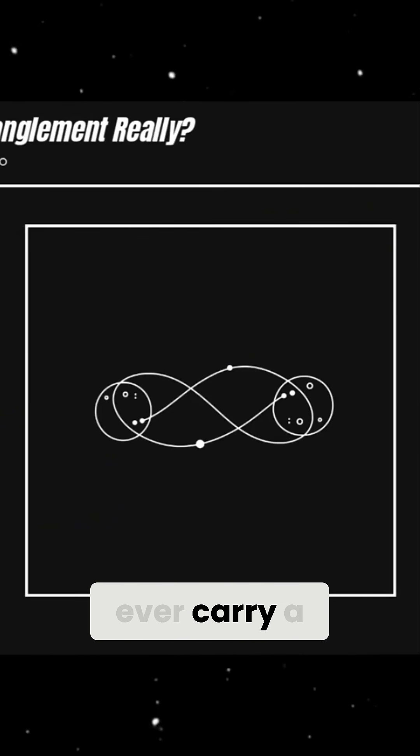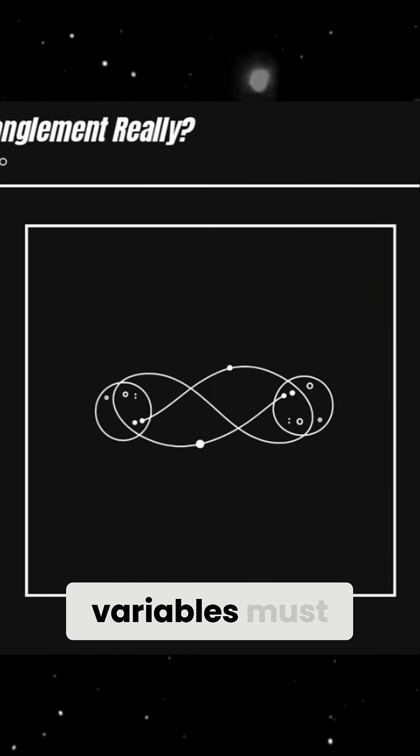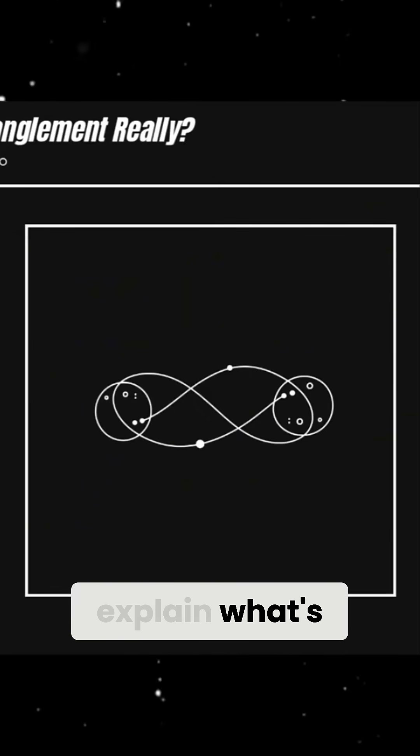Faster than light could ever carry a signal between them. This paradox led Einstein and other physicists to believe that quantum mechanics must be incomplete and that some hidden variables must exist to explain what's happening.